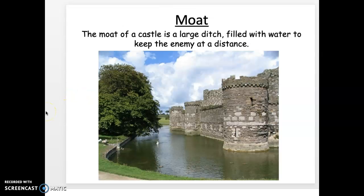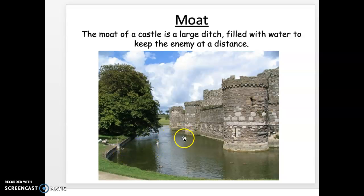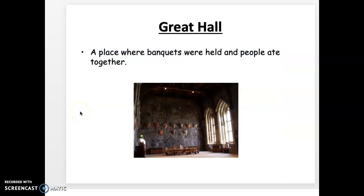The moat was also great protection against invaders — it would be a large ditch that was dug and usually filled with water, providing an extra layer of protection to prevent enemies from entering the castle. The great hall was usually in the keep; this is where banquets were held and people would eat together — it was the gathering place. Although castles might have had windows, they were very cold and dark because they were made out of stone.